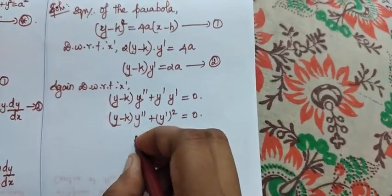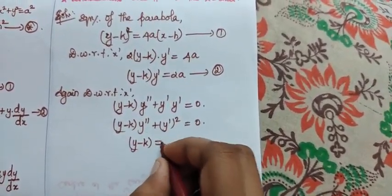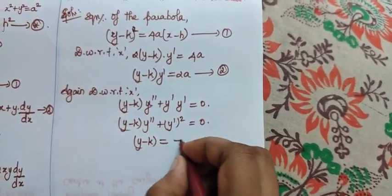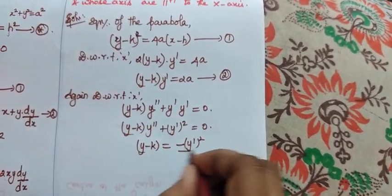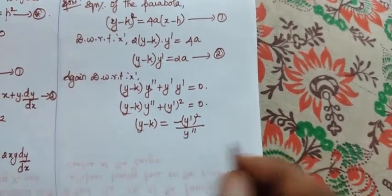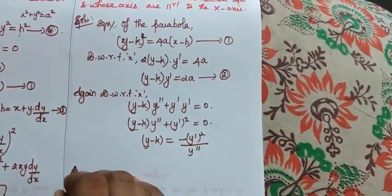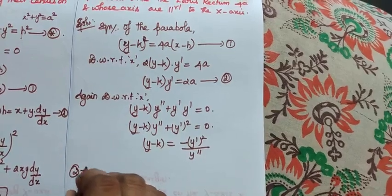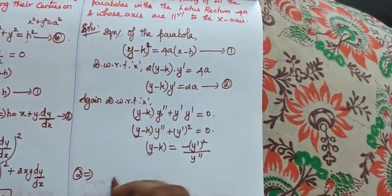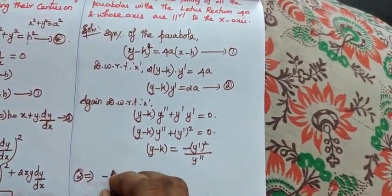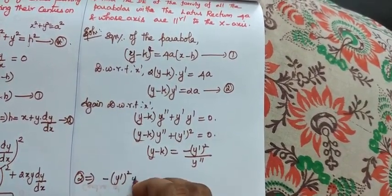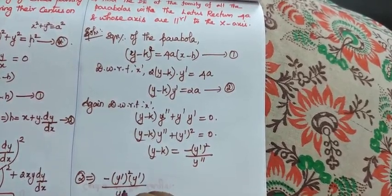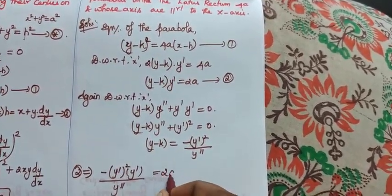I need what is (y - k)? (y - k) is equal to, bring it to this side: minus (y')² divided by y''. Now, what is our second equation? Second equation implies my answer is (y - k) is -(y')² times y' divided by y'' equal to 2a.